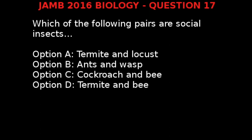Looking at our options, we are left with option B and option D. Option B says ants and wasps, and option D says termites and bee. The correct answer is option D, because all termites and bees are social insects, but in option B, not all wasps are social insects. So option D is our correct answer.